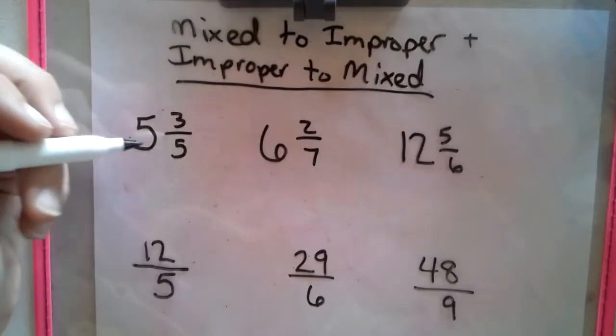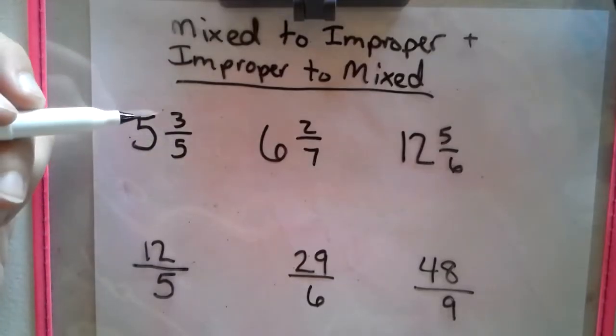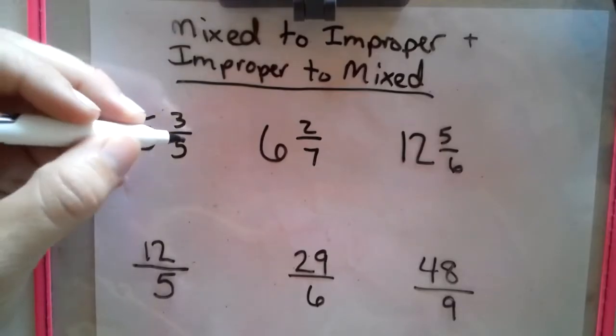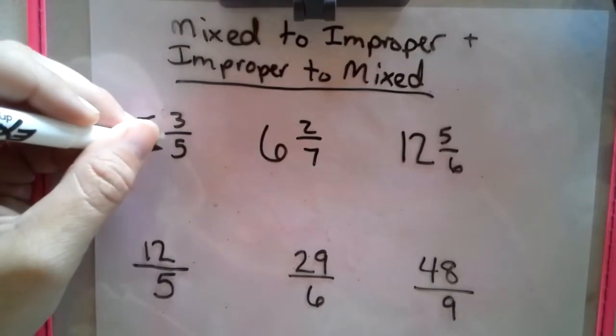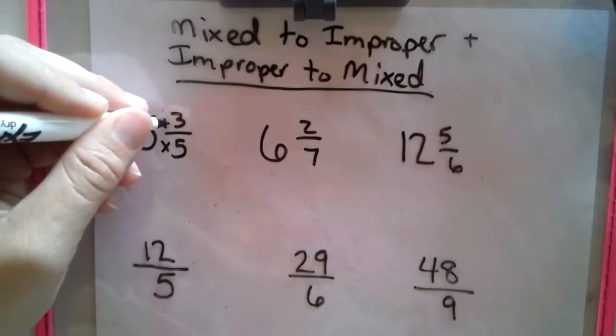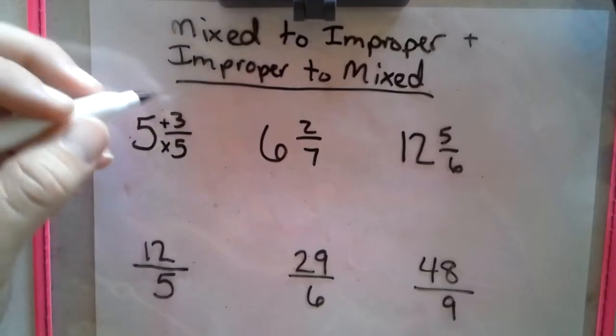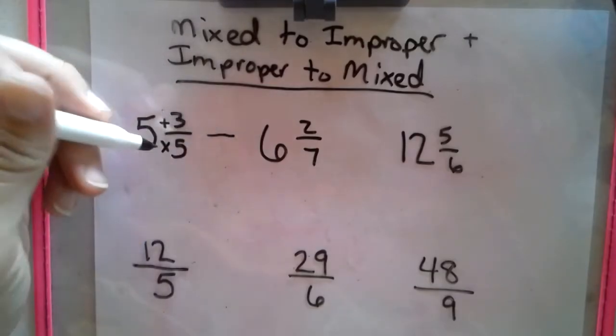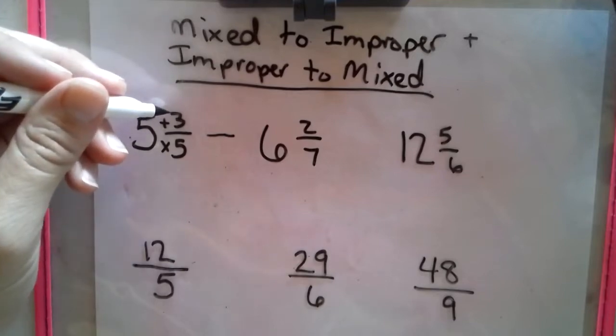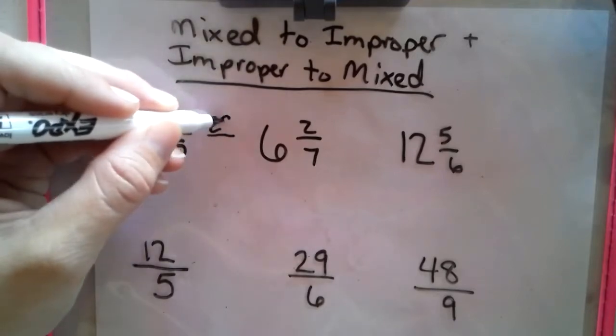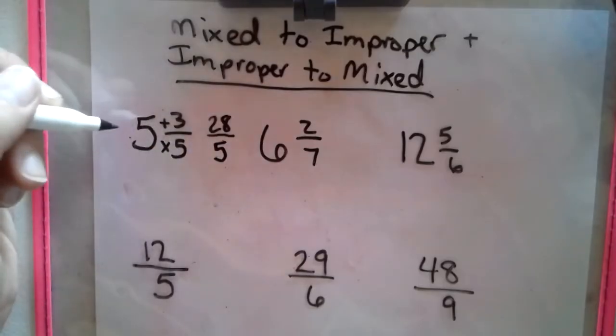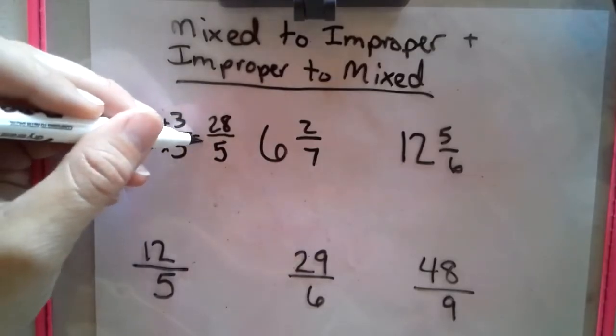So here we have a mixed number that we're going to be making into an improper fraction. Now there's a process that we want to do here. We're going to take this denominator, multiply it by the whole number, and add the numerator to get a whole new numerator. So let's do that first. 5 times 5 is 25, plus 3 equals 28, and we keep our original denominator. And that's a mixed number into an improper fraction.